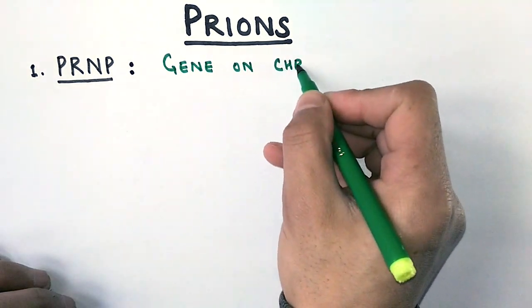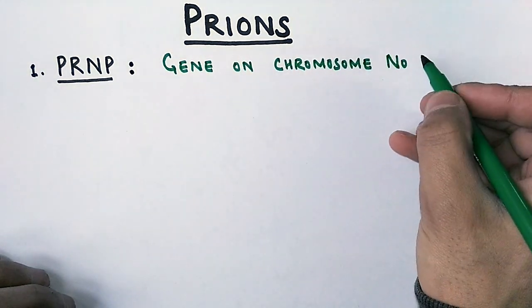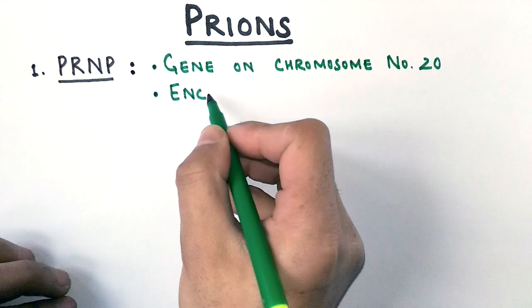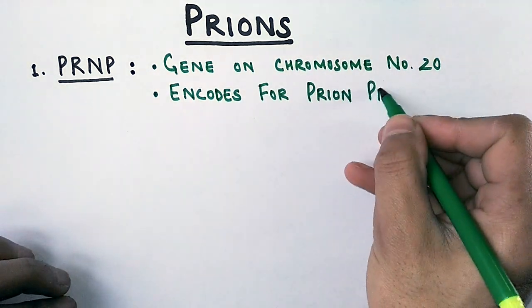Before proceeding to what prions are, let's clear the following terms first. First thing we see here is PRNP, a gene in our DNA that's present on chromosome number 20, and this gene encodes for a protein called prion protein.